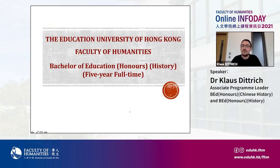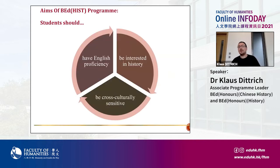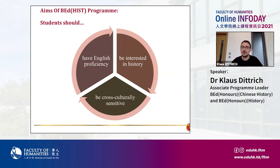The Bachelor of Education in History is a five-year program. If you are considering studying this program, you should have good English proficiency because the entire program is taught in English. You should also have an interest in history, and ideally you will have already studied history or Chinese history in secondary school.